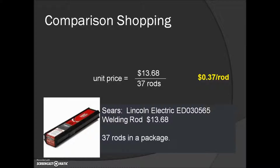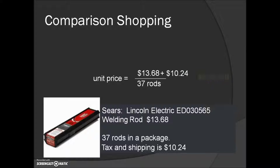When we're shopping, we also need to consider if there are additional costs. If this item were sold in a catalog or on the internet, there may be tax and shipping that add to the total cost. Compared to buying at the local store, our unit price changes — adding tax and shipping gives us a total of $23.92 divided by 37 rods, resulting in a unit price of 65 cents per rod, which is almost double the original 37 cents per rod.